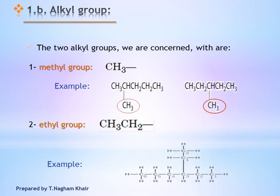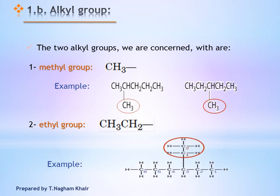For example, here we have an ethyl group on a straight chain alkane. You have to pay attention that when we draw a branched alkane, an ethyl group cannot be added at carbon number 1 or carbon number 2 — it should be added at least at carbon number 3.